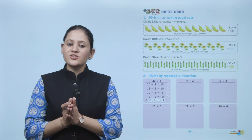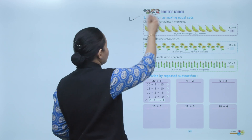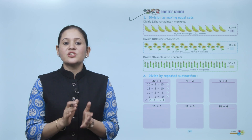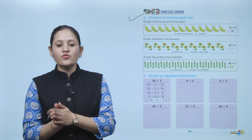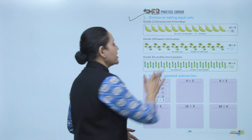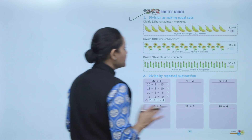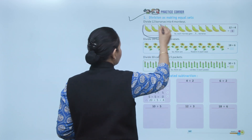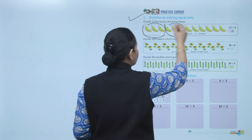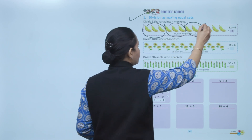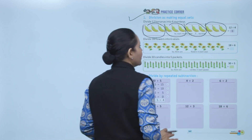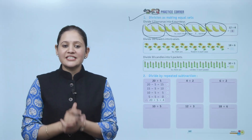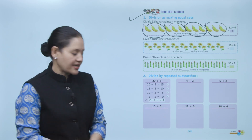Next, practice corner — division as making equal sets. Divide twelve bananas into four monkeys. Twelve bananas ko humme four monkeys mein divide karna hai. Make four equal groups — each monkey will get three bananas. Clear! Next is division by repeated subtraction.